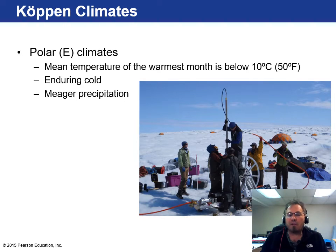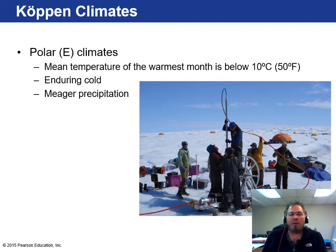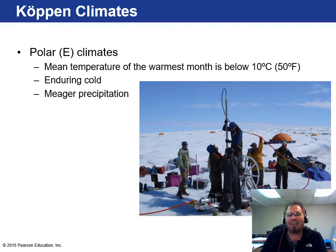The polar climates sit at the top or bottom of the world, where it almost never gets above 50 degrees — enduring cold. And you wouldn't think so, but the polar regions really don't get that much precipitation. Because they're sitting at the extremes of the Earth, weather patterns don't allow much new precipitation. A lot of the snow and ice pack there has been sitting there a long, long time — it doesn't snow up in the polar regions that much.